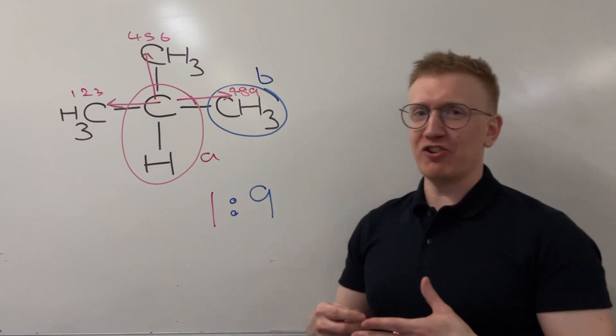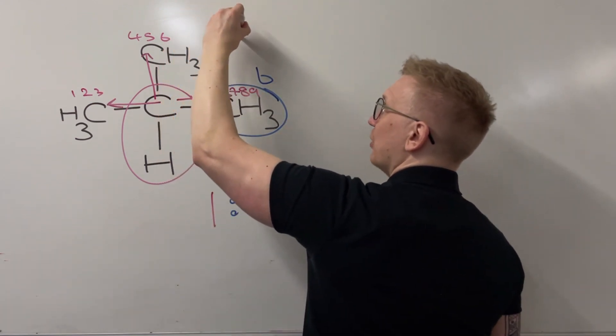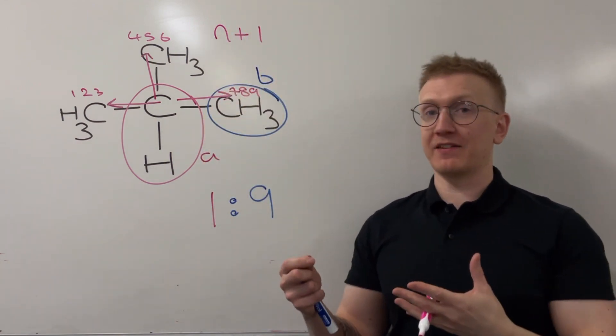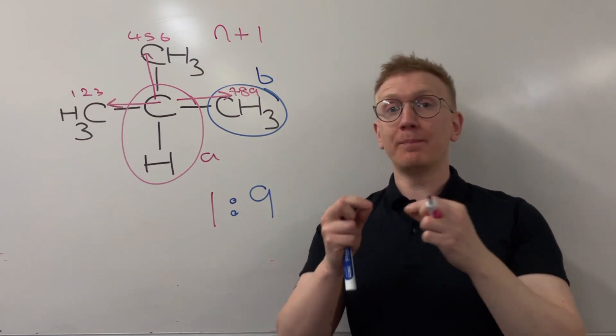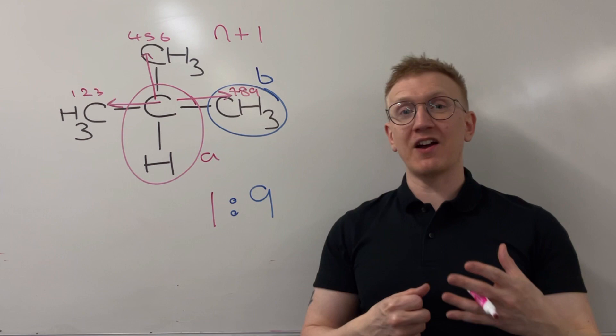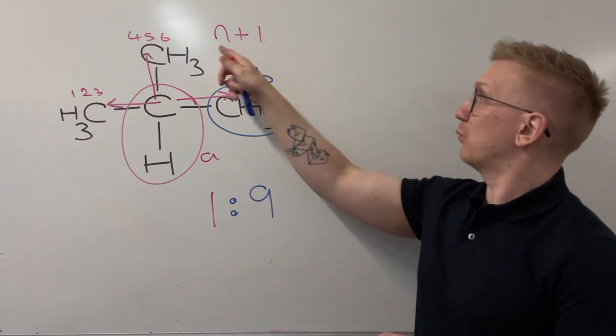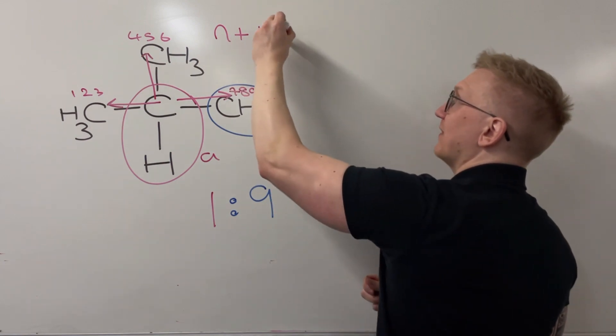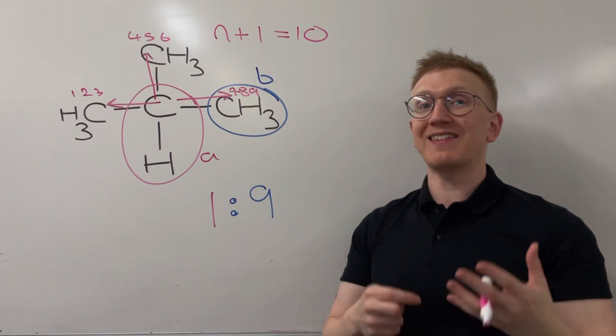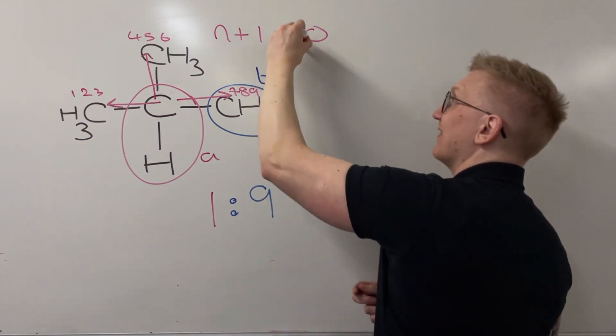So what do I do with this information? Well now what I'm going to use is something called the n plus one rule. The n plus one rule is going to tell me what my splitting pattern looks like, how many sub peaks I expect to see for this particular peak that we've already identified is going to be present on the hydrogen NMR spectrum. So n plus one, which is going to be nine plus one is going to be ten. And that can be described as a multiplet of ten sub peaks, or we can describe it more formally as a dektat.